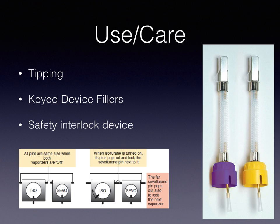Anesthetic vaporizers also use key device fillers. This prevents placement of a liquid anesthetic into the vaporizing chamber that is different from the anesthetic for which the vaporizer was calibrated. This is uniquely important for desflurane, because its vapor pressure is near one atmosphere, and accidental placement of desflurane in a contemporary vaporizer could result in an anesthetic overdose.